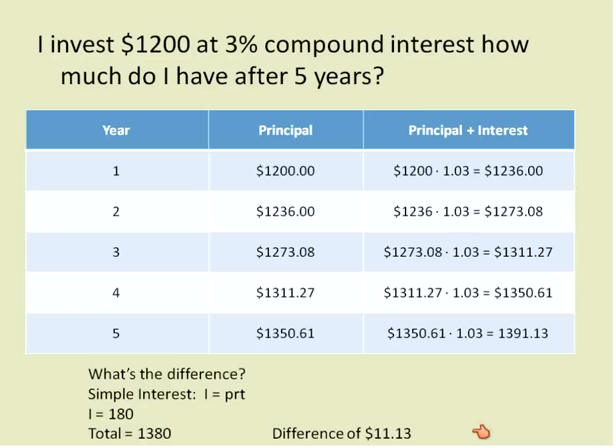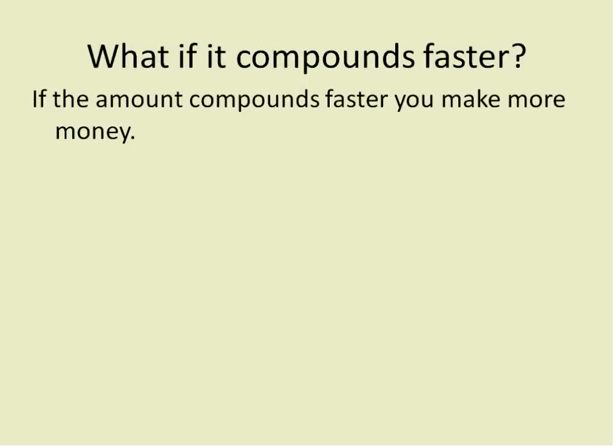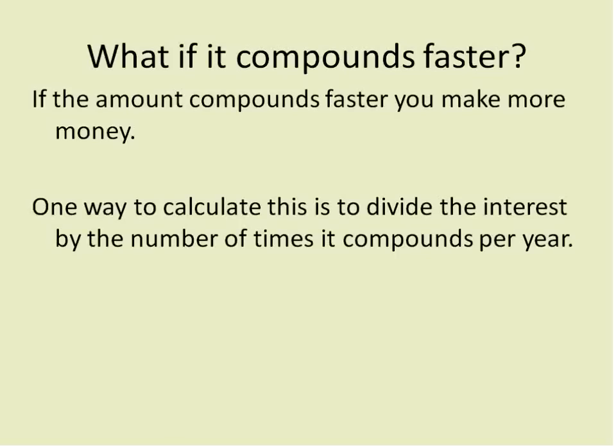Obviously the more money you invest, the more the difference would be. This also begs the question: what if it compounds faster? If it compounds every month, you're getting interest on the interest from each month all year long, and you do end up getting a little bit more. One way to calculate this is to divide the interest by the number of times it compounds. You can divide the interest by however many times it compounds, or divide the time by however many times it compounds.